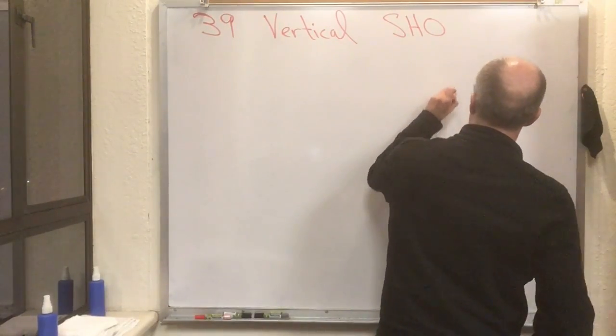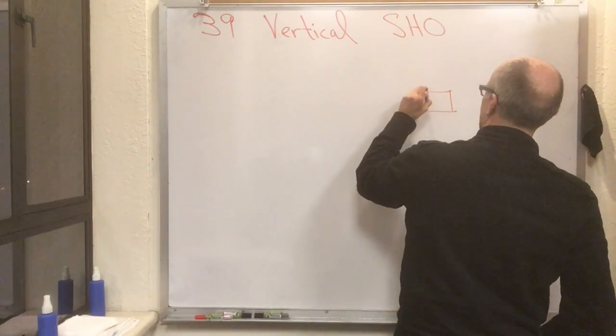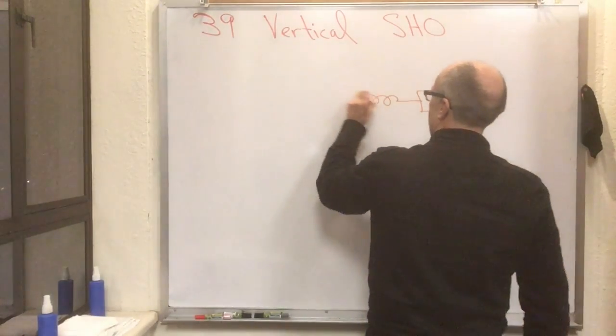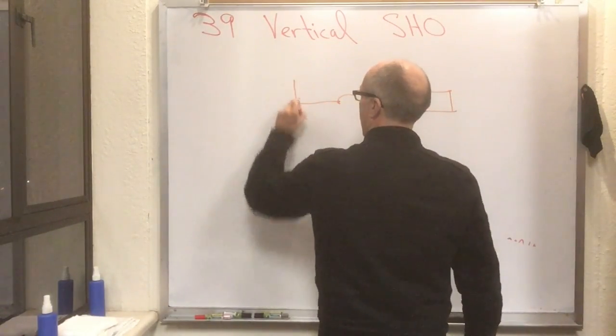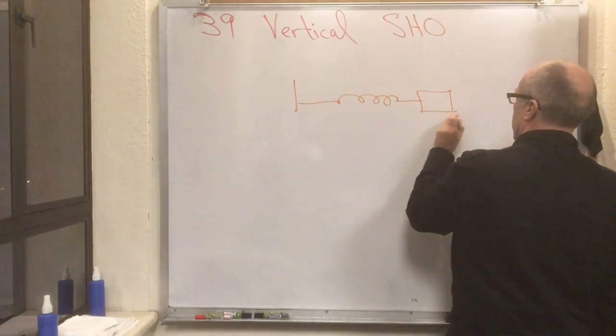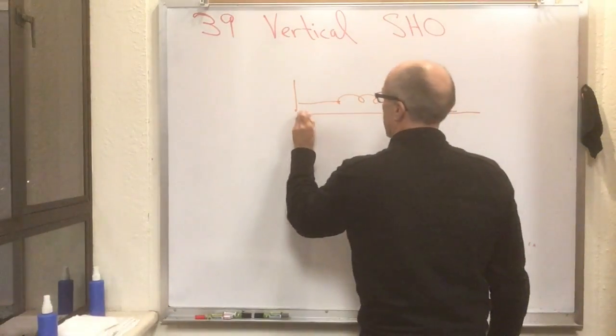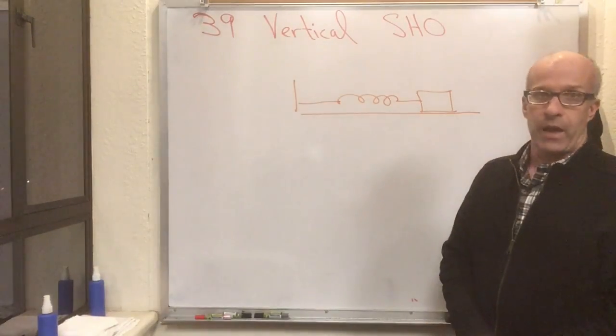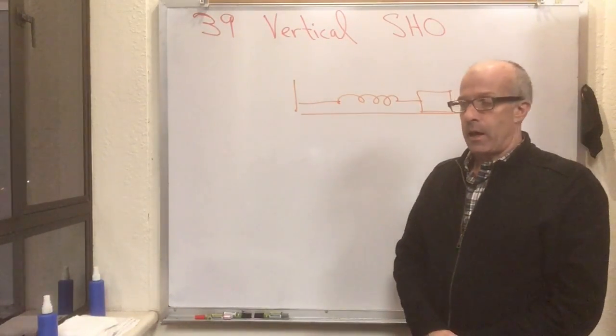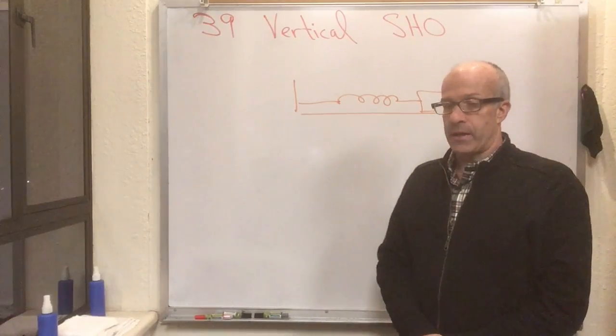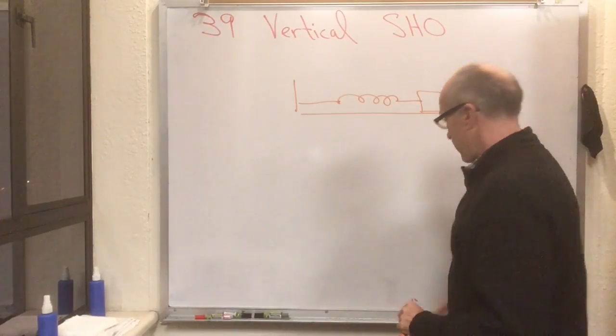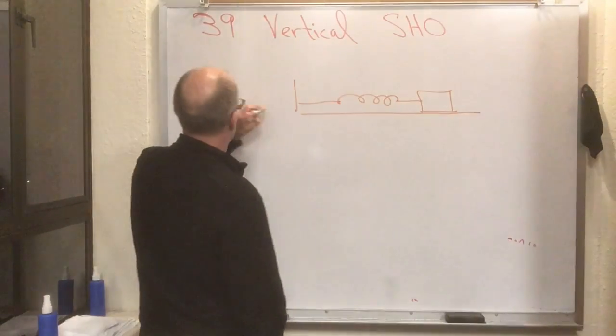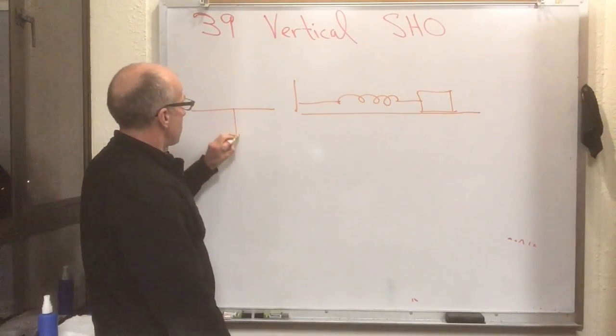It's pretty hard to arrange for a frictionless table. If I have a situation like this—I have a mass, I have a wall—that's all easy to arrange, but to arrange for a frictionless table is a little bit tricky. Now we do have them here, but it's not the more common case.